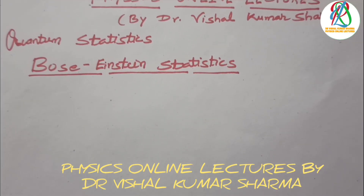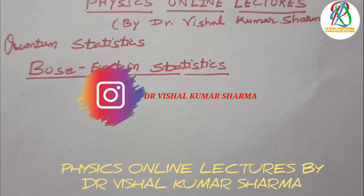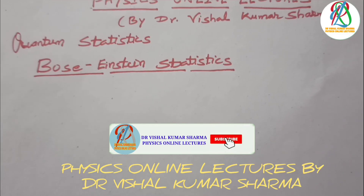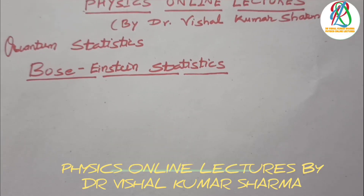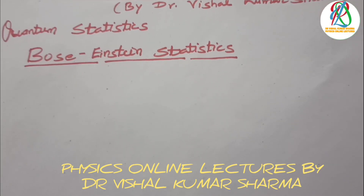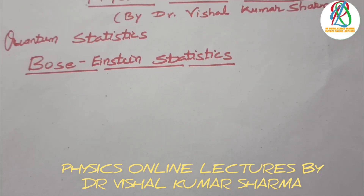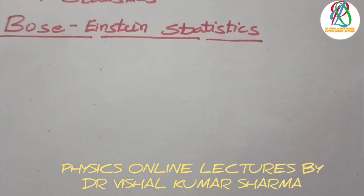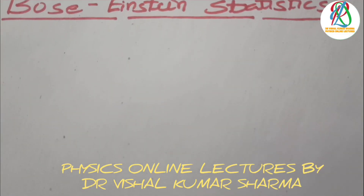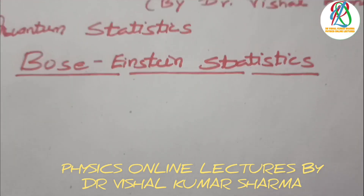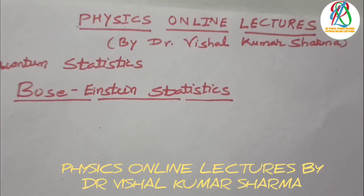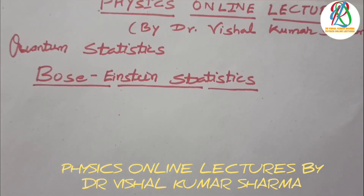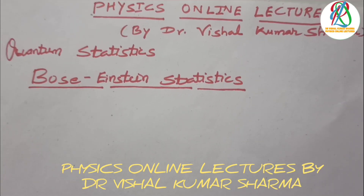Hello students, welcome again to the physics online lectures. We were discussing quantum statistics. In this regard, we have discussed the Fermi-Dirac statistics — you can go through those lectures in which I covered all the properties related to Fermi-Dirac statistics: Fermi energy, degeneracy factor, discriminating factor, ideal Fermi gas, and applications including white dwarfs and the Chandrasekhar limit.